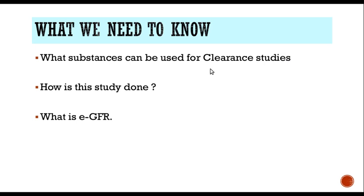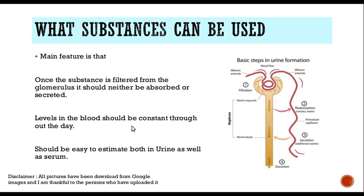Now, what do we need to know about a clearance test? We need to know what substances can be used for clearance studies. We need to know how the study is done, and we also need to know about something new which is called the eGFR. I will cover all these in the lecture. Now, what are the substances that can be used? When I use a substance for doing a clearance study, I need to be sure the substance fulfills the following criteria.